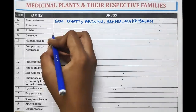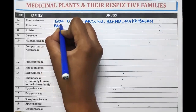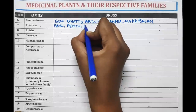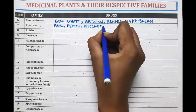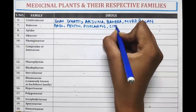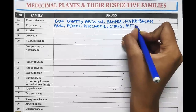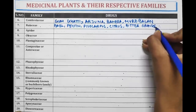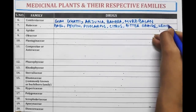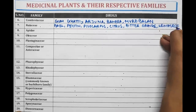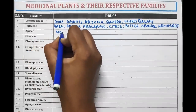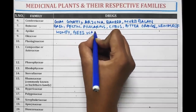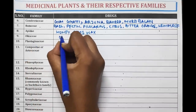Rutaceae family contains drugs which are Bael, Pectin, Pterocarpus, Citrus fruits, Bitter Orange Peel, Lemon Peel, and Rue. Apidae family contains Honey and Beeswax. Oleaceae contains Olive Oil.